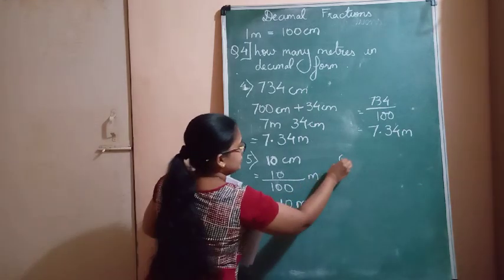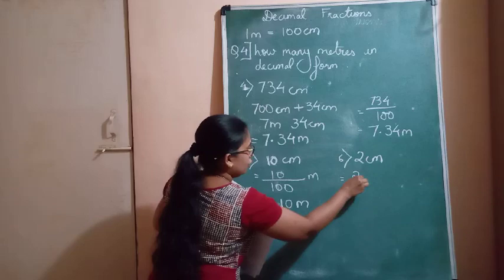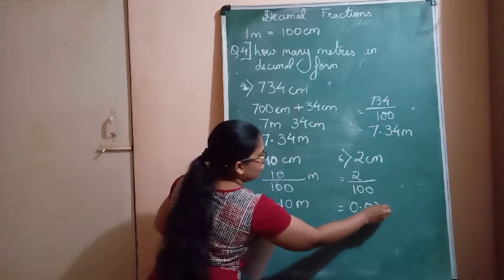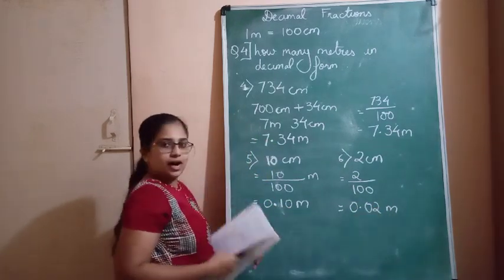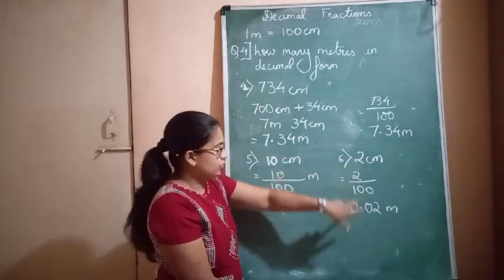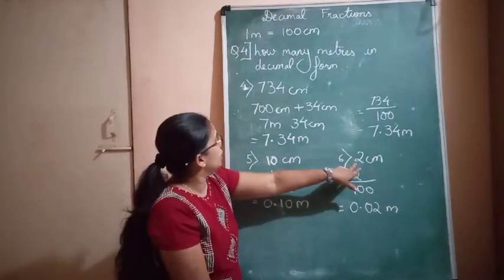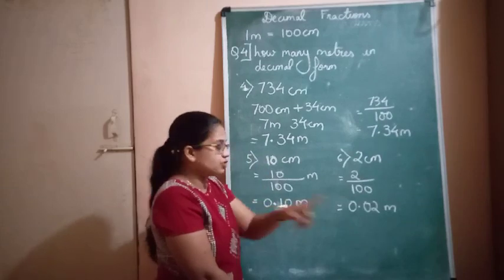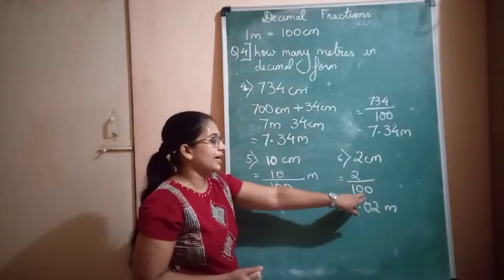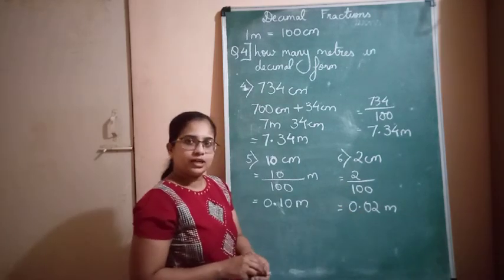The sixth question is 2 centimeters. 2 would be done in a similar manner: 2 upon 100, which gives you 0.02 meters. If you find that difficult, remember there is no meter mentioned so you write zero in that place. After the decimal there is only one digit, so as in a previous sum you have to add a zero before it. What you are essentially doing is dividing by 100 — writing it as a decimal fraction and converting it into a decimal number.